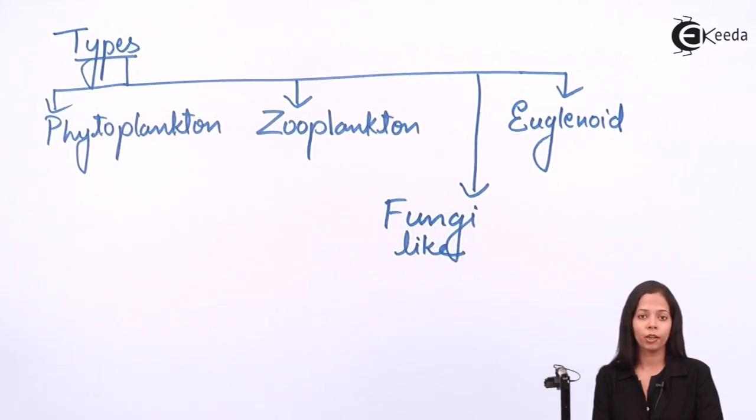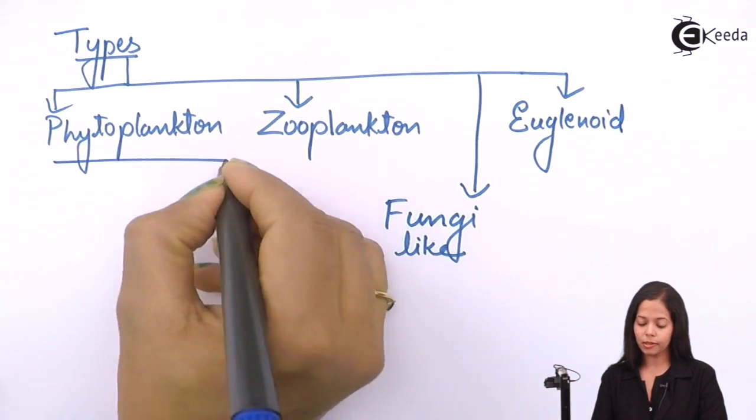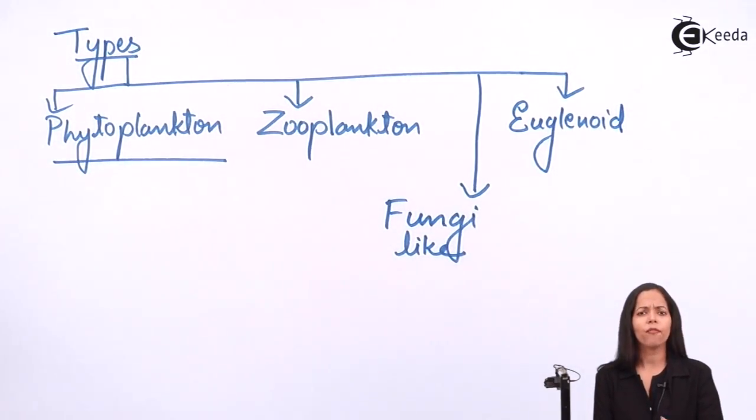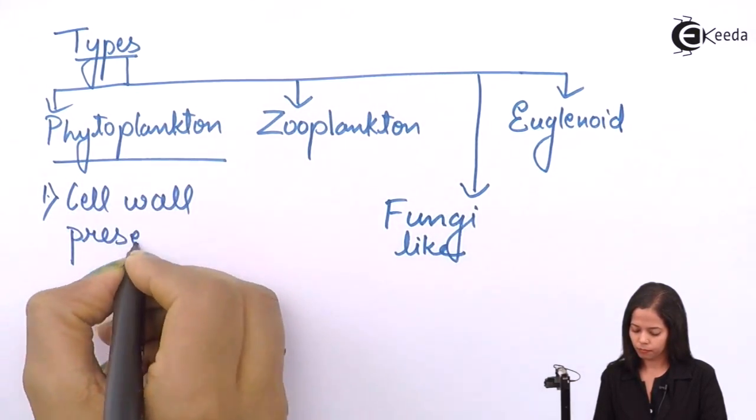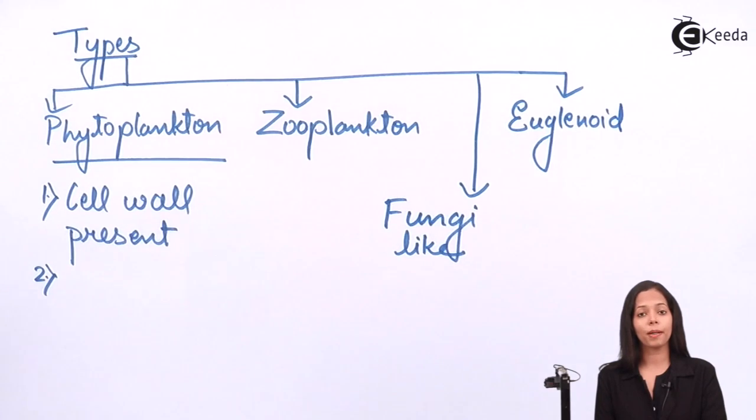I am starting with phytoplanktons. Phytoplanktons are plant-like protists. They show features present in plant cells. Some features are confined only to plant cells and not present in animal cells. The very first one is presence of cell wall. If cell wall is present, it is made up of cellulose, same as plants.